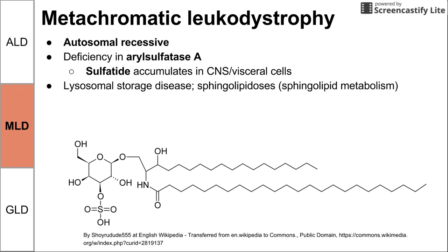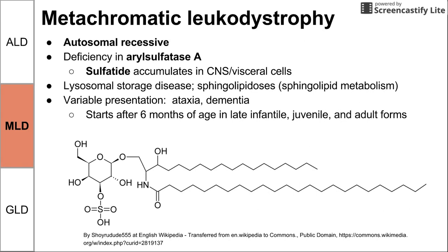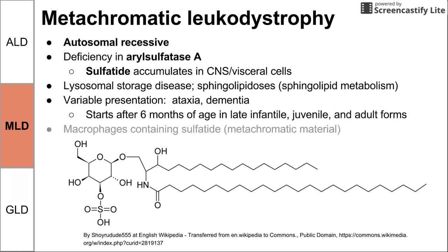Metachromatic leukodystrophy is a lysosomal storage disease, and within LSDs, it's in the subcategory of sphingolipidoses — a problem with sphingolipid metabolism. There are variable presentations for MLD, including ataxia and dementia. The course usually starts after six months of age, with different forms: late infantile, juvenile, and adult. Macrophages will contain sulfatide, and sulfatide is a metachromatic material — this helps you remember the name when you see arylsulfatase A.